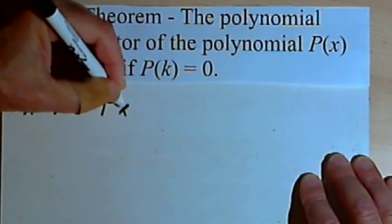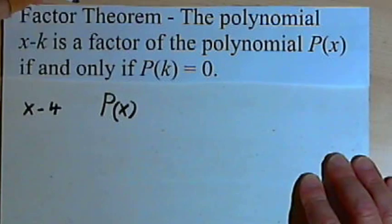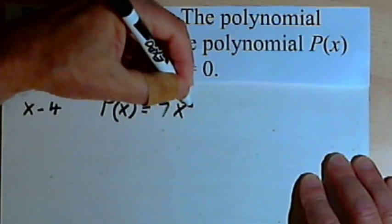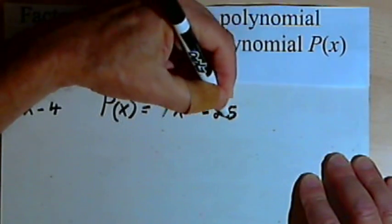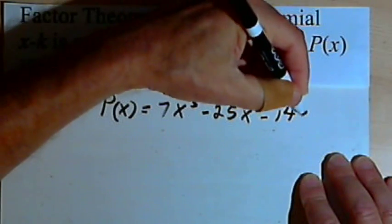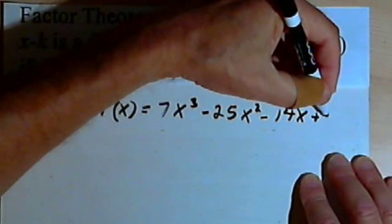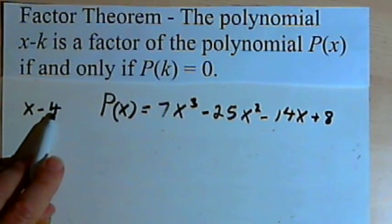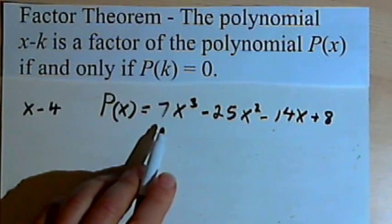And let's say that our polynomial P(x) is 7x to the third minus 25x squared minus 14x plus 8. And I want to find out whether x-4 is a factor of this polynomial.